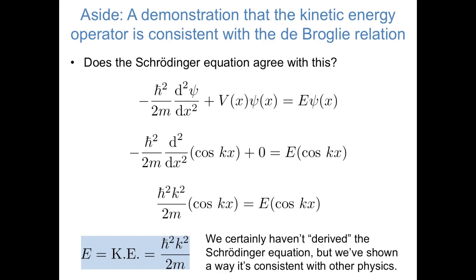I should emphasize that we certainly haven't derived the Schrödinger equation. Really, the only reason that the Schrödinger equation was accepted was that it was successful in predicting the energy levels of a hydrogen atom. But because we'll be using the Schrödinger equation so much in this course, I wanted to at least show that the results from the Schrödinger equation are consistent with other physics that was known at the time.